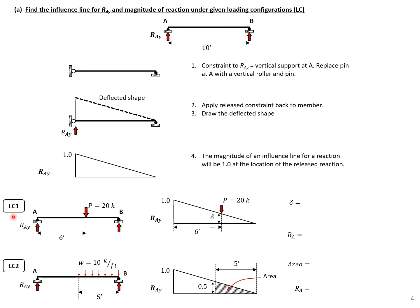Next, we look for the reaction at A under two loading configurations, LC1 and LC2. LC1 is a point load P = 20 kips applied at 6 feet from the left support. The influence line ordinate at that location is (10 - 6) / 10 = 0.4. So the reaction is 0.4 × 20 kips = 8 kips. Under load configuration 1, the reaction at the left support equals 8 kips.